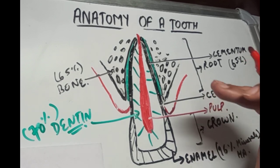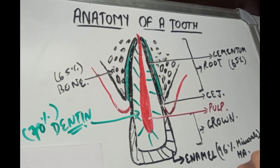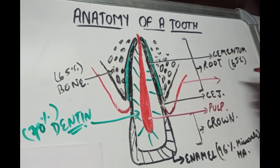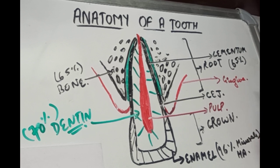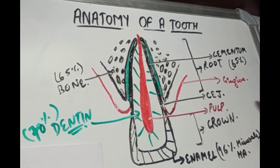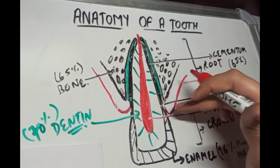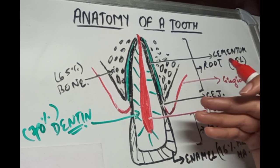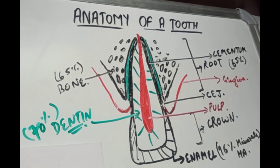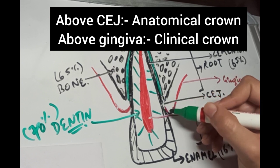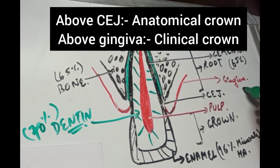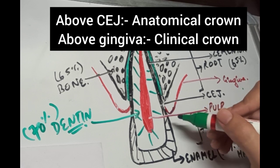Now the crown portion of the fully erupted tooth is partly covered at the cervical third by a soft tissue called the gingiva — or what we call the gums. Anything above this gum line that is visible inside the oral cavity is called the clinical crown, as we can see it clinically. Remember, anything above the cemento-enamel junction is called the anatomical crown, and anything above the gum line or gingiva is called the clinical crown.